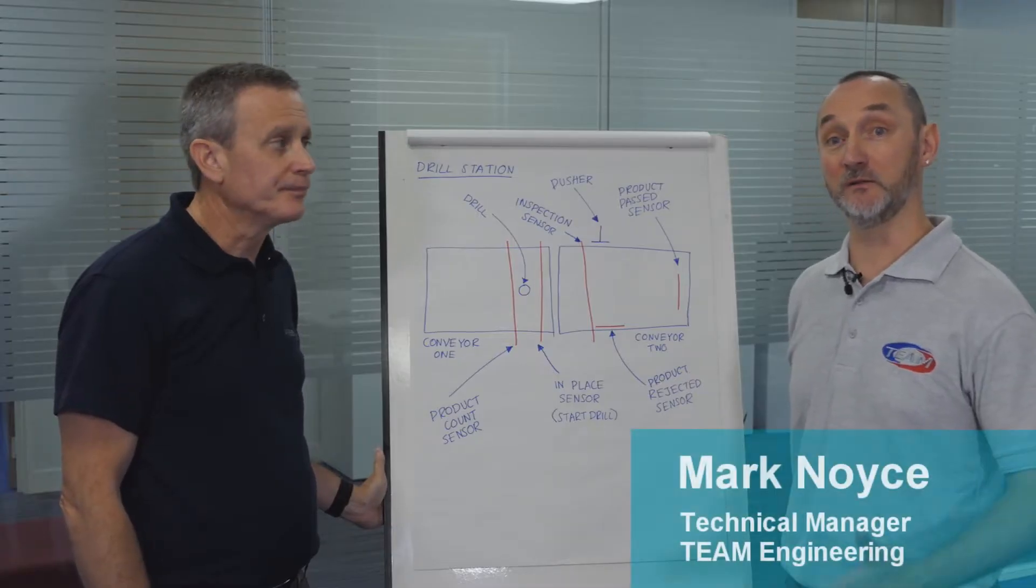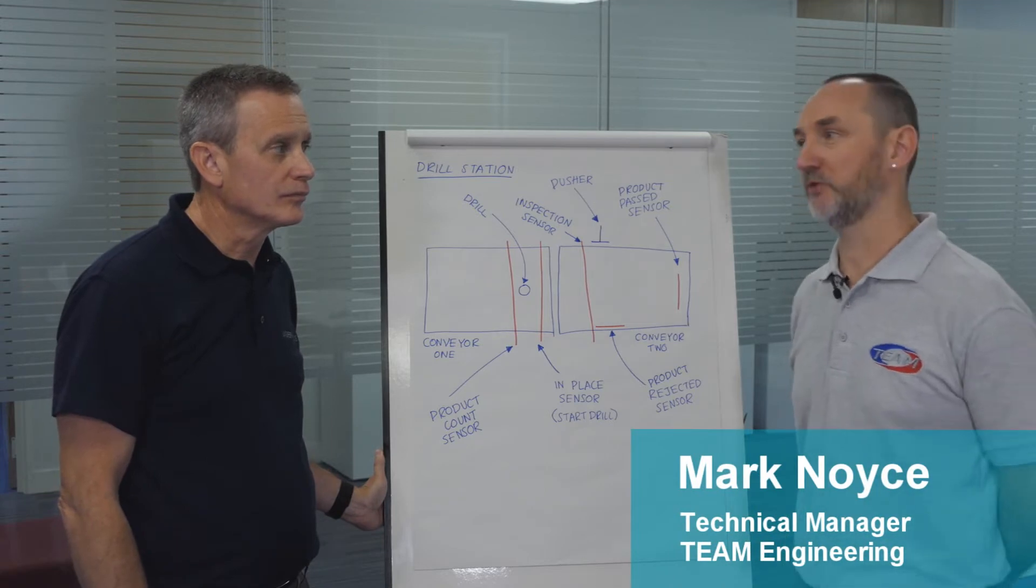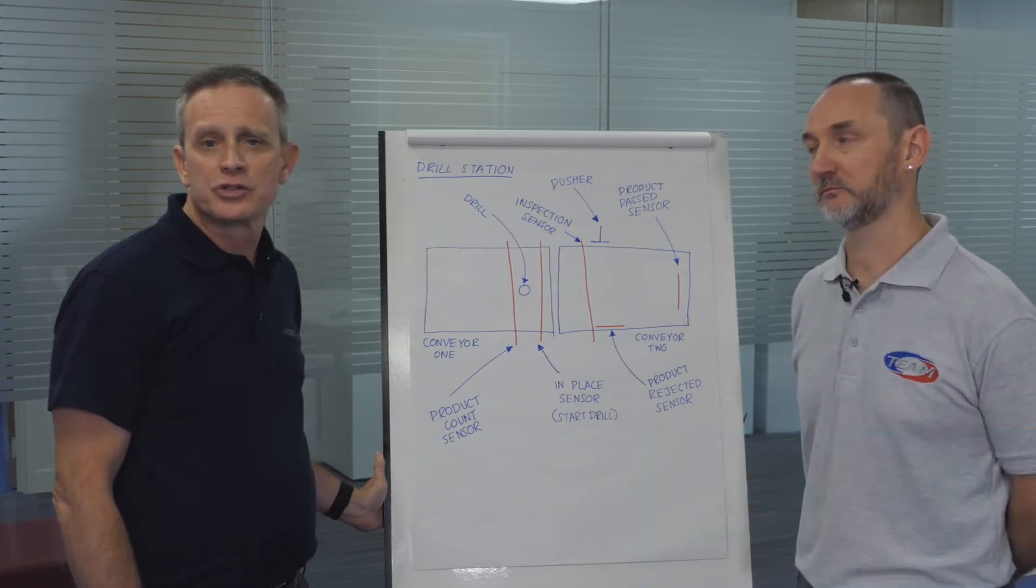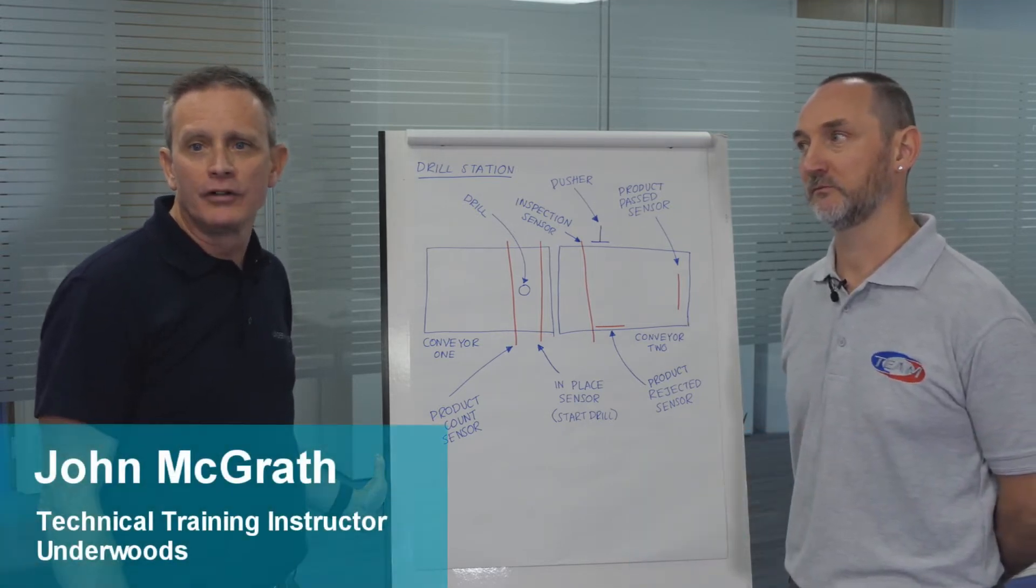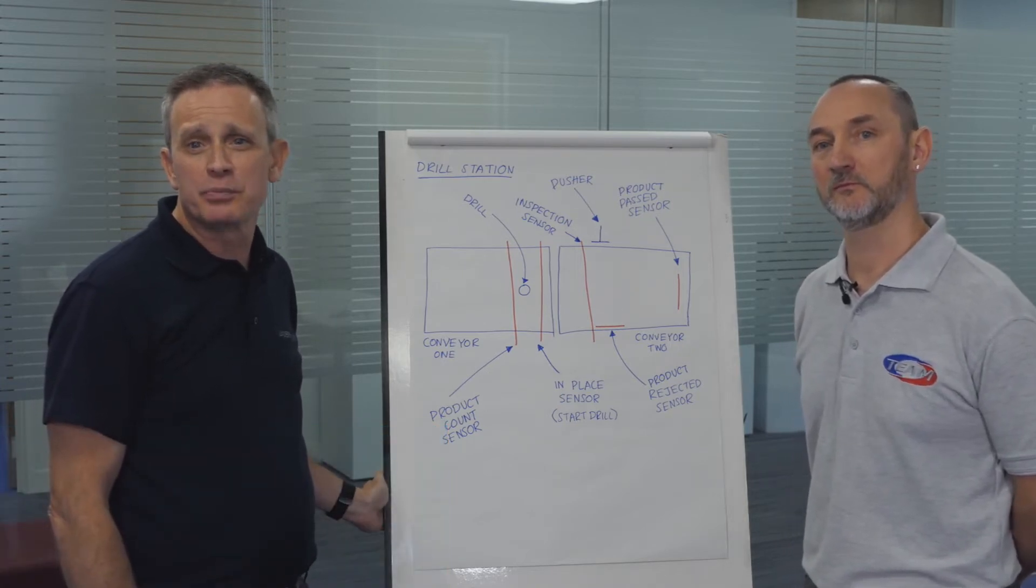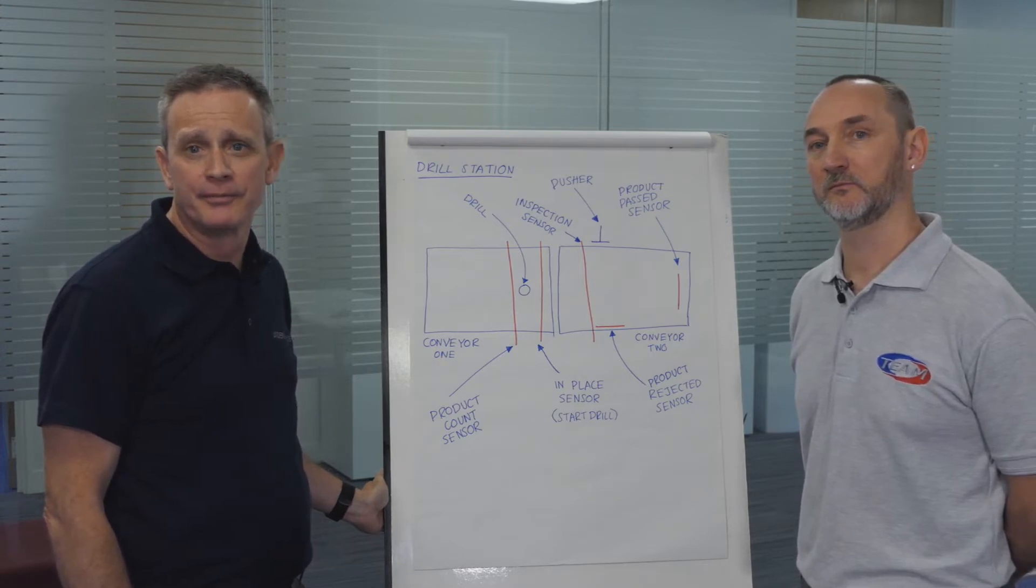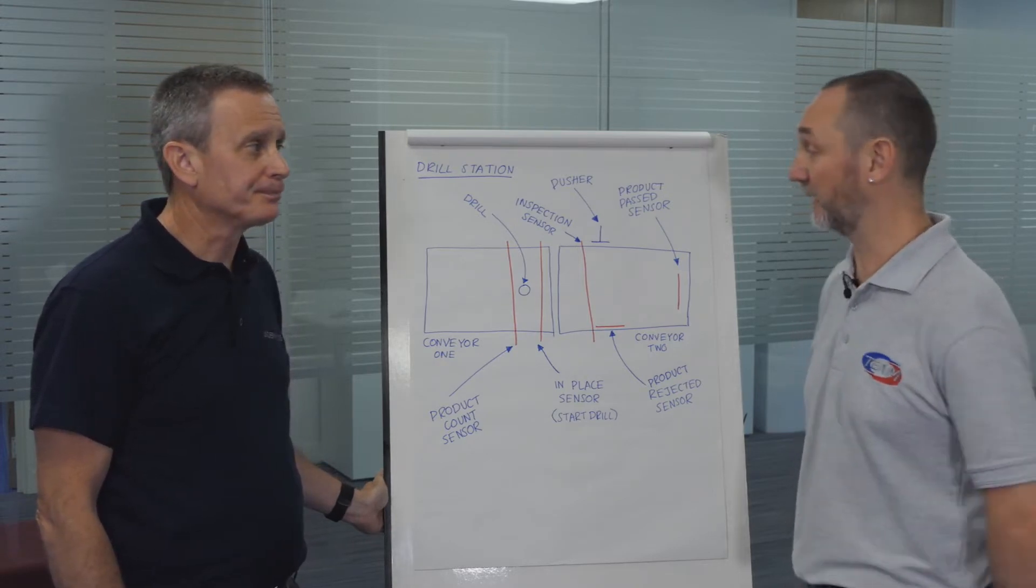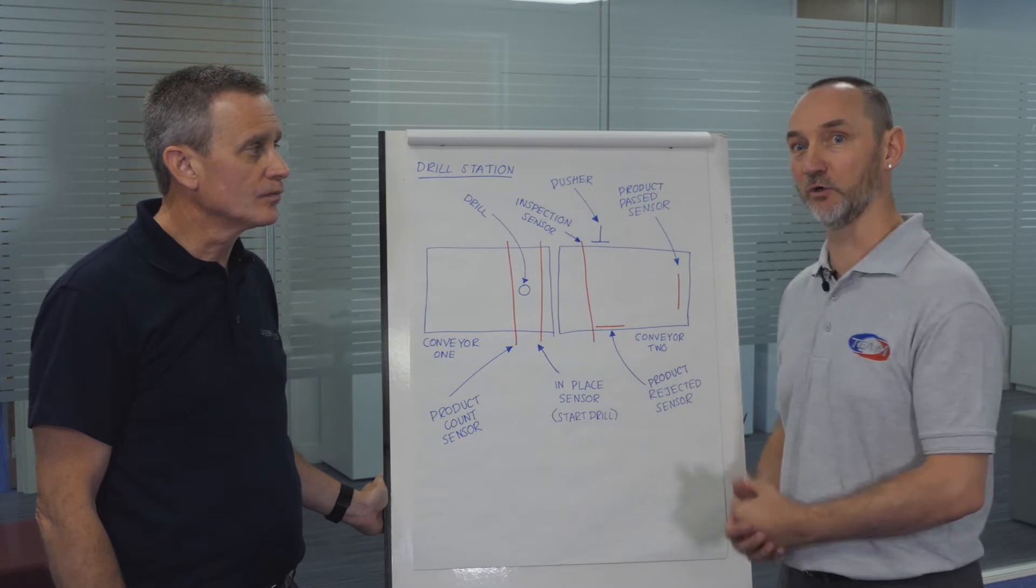You've probably heard the terms digital twin and virtual commissioning. What does this really mean? A digital twin gives you a full virtual copy of your machine operating exactly as it would be delivered to your customer. Virtual commissioning allows you to validate your design at the very early concept stages.